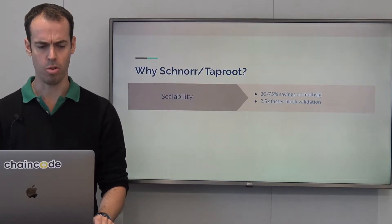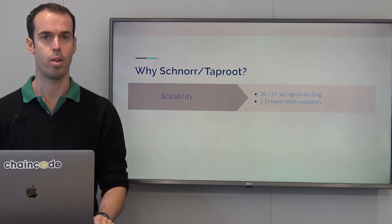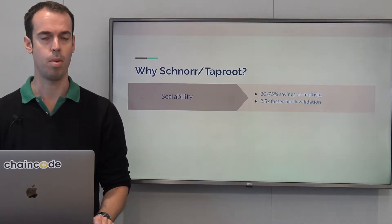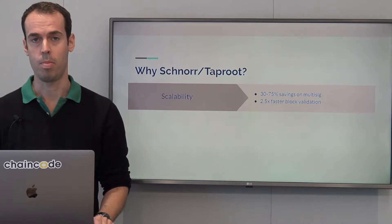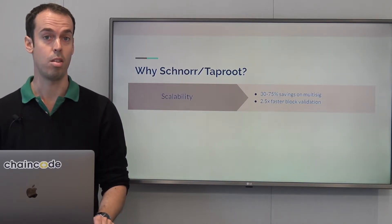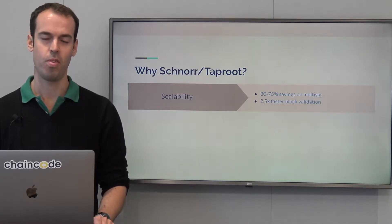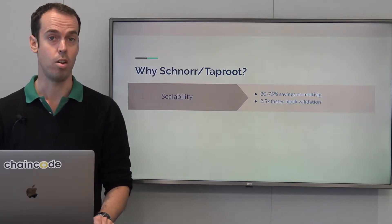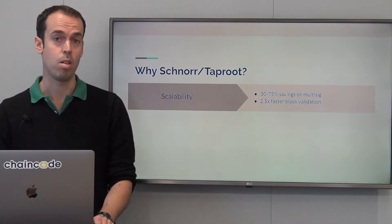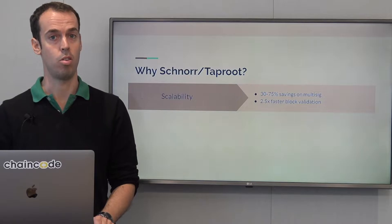So why Schnorr Taproot? When we talk about enhancements in Bitcoin, we often talk about trade-offs. Maybe something that's good for privacy is bad for scalability, or something that's good for scalability is bad for functionality on the network. It would be unfair to say Schnorr Taproot avoids all of these trade-offs, but it does present a very clear win in three areas that Bitcoin users care about.